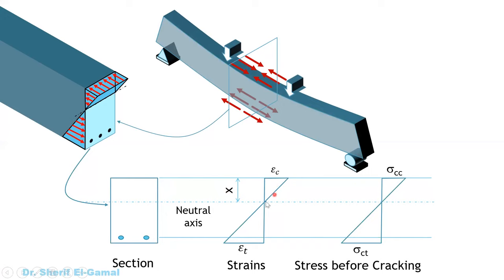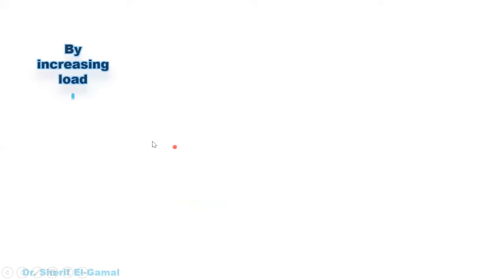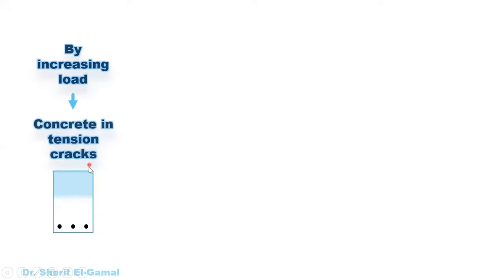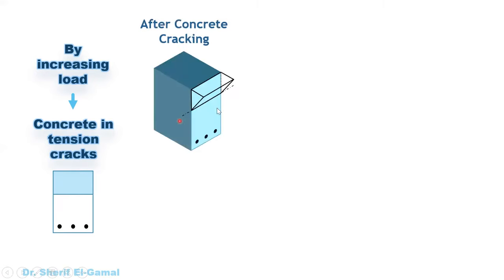The strain will always be linear, and before cracking the loads are very small so the stress will also be linear. We have compressive strains above the neutral axis and tensile strains in the concrete under the neutral axis. By increasing loads, and as concrete is weak in tension, the concrete under the neutral axis will crack, and only the compression forces will be carried by the concrete above the neutral axis. All the tensile forces will be carried by the reinforcing steel bars.